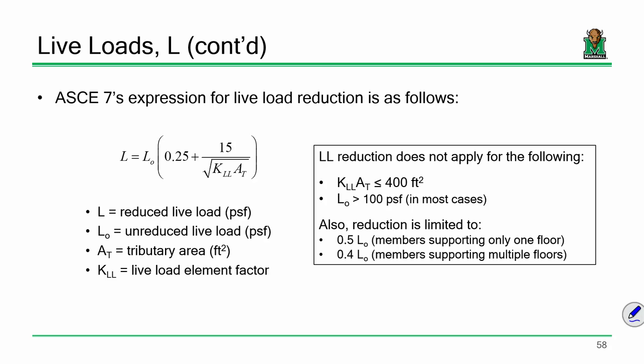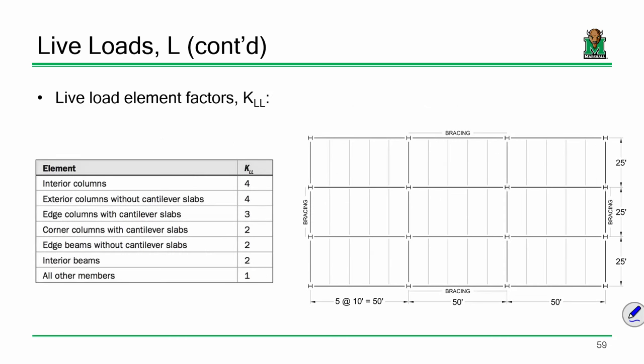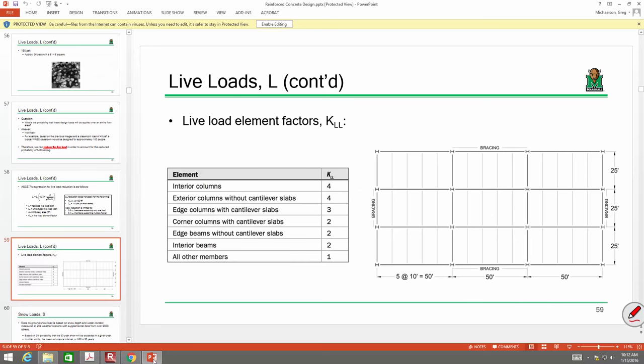That's everything in a nutshell except for one thing: these live load element factors, the K-sub-LLs. What do these mean? I can show you the table and you can look them up, but I want you to understand where these values are coming from. So I want to look at this floor frame — the same one we looked at earlier. Would you agree that all of these individual interior floor beams are identical? They all have the same tributary area. So let's just pick a random floor beam. Would you agree that this shaded rectangle represents the tributary area, A-sub-T? Halfway over to each adjacent member — halfway over.